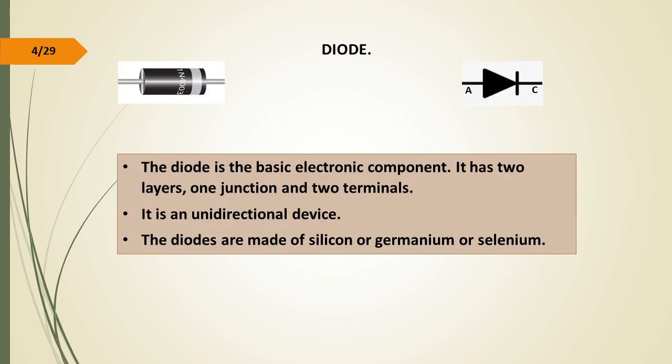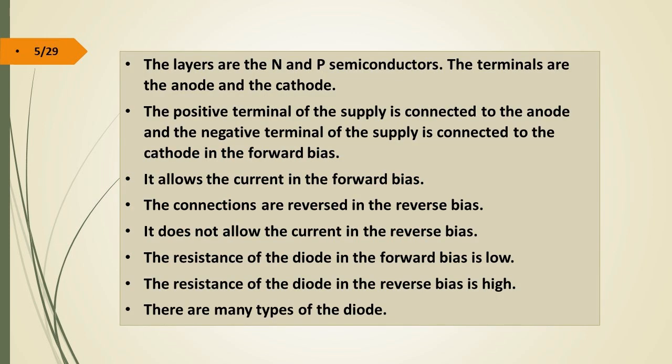Diode. The diode is the basic electronic component. It has two layers, one junction, and two terminals. It is a unidirectional device. The diode is made up of silicon, germanium, or selenium. The layers are the N-type and P-type semiconductors. The terminals are the anode and the cathode.